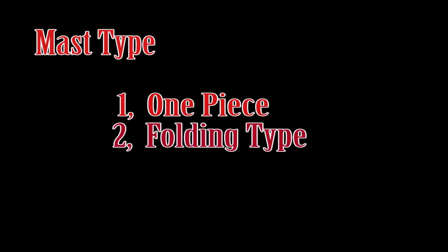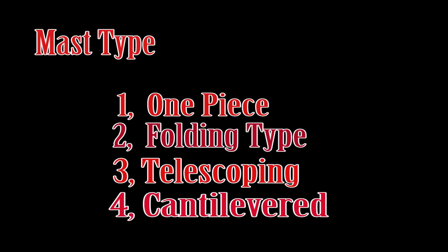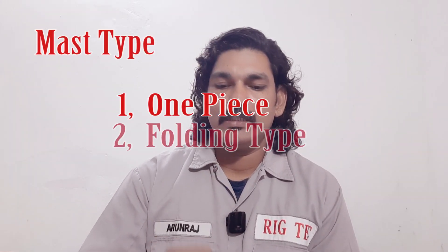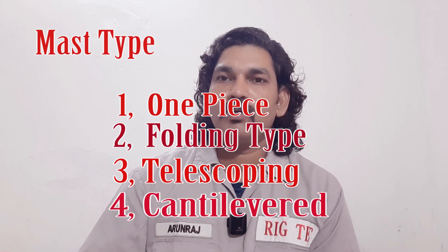First, I will explain to you the types of mast. There are four types of mast. First is the single piece mast. Second is the folding type mast. Third is the telescopic mast. Fourth is the cantilever type mast. In the oil drilling industry, you can see the majority of these four types of mast, and we will discuss each one by one in upcoming episodes.